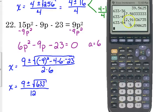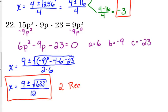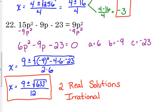Here is the biggest mistake people make: they want to simplify the 9 over 12. Yes, 9 and 12 are both divisible by 3, but because of the plus or minus on top, you cannot simplify unless there is a factor of 3 in front of the square root — and there is not. So these are your two real irrational solutions: 9 plus or minus the square root of 633, all over 12.